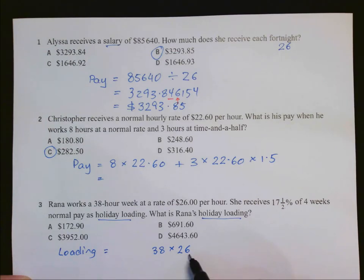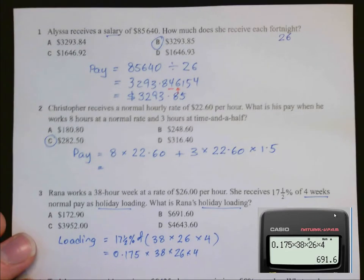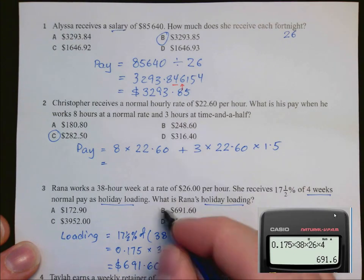So 38 hours, $26 per hour and we need 4 weeks worth. But we need 17.5% of that amount as the holiday loading. So on our calculator, it'd be 0.175 times these numbers. And let's calculate that. And we get $691.60 which we can see is B.